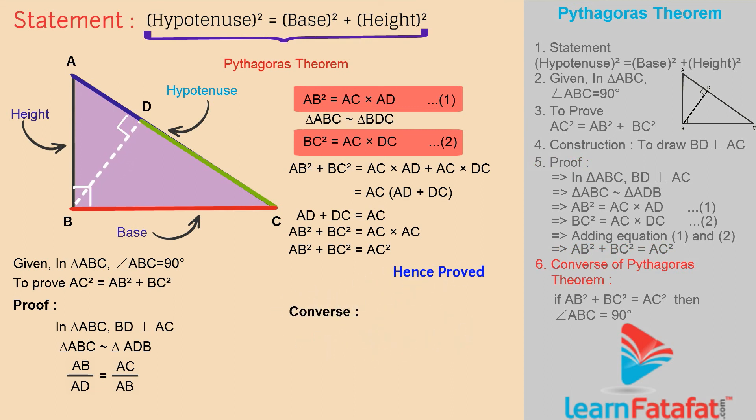Converse of Pythagoras Theorem: If in a triangle the sum of squares of two sides is equal to square of third side, then the triangle is right-angled triangle and the angle opposite to third side is right angle. If AB² plus BC² equals AC², then triangle ABC is right-angled triangle and angle ABC equals 90 degrees.